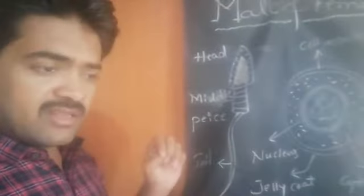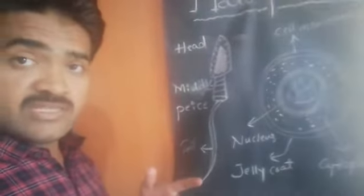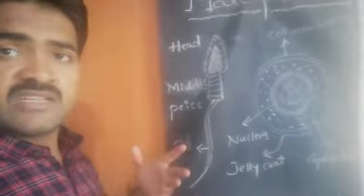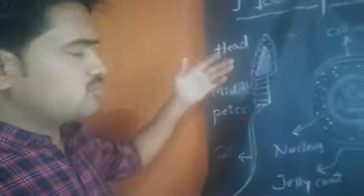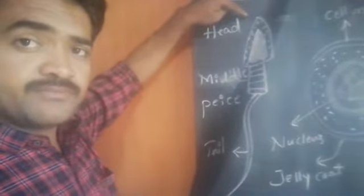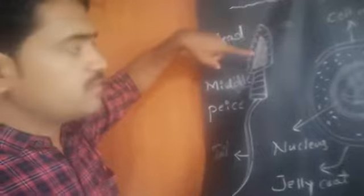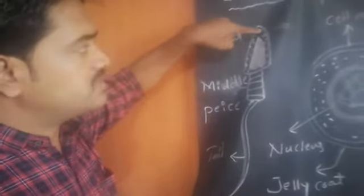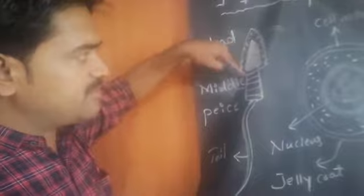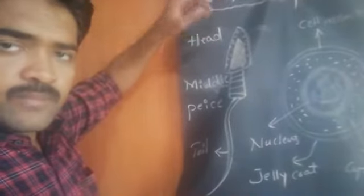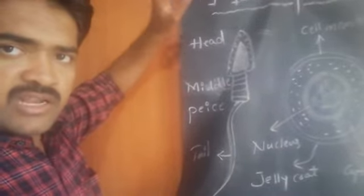Whatever cell organelles we can see in normal cells, those are also present here. In the head portion, the cell membrane is present, cytoplasm is present, as well as the nucleus. The cytoplasm contains all the other cell organelles.